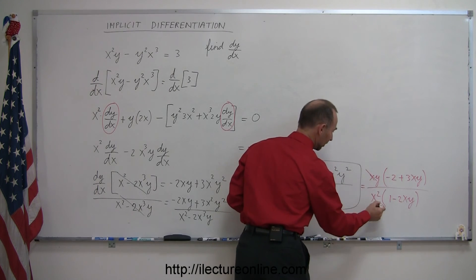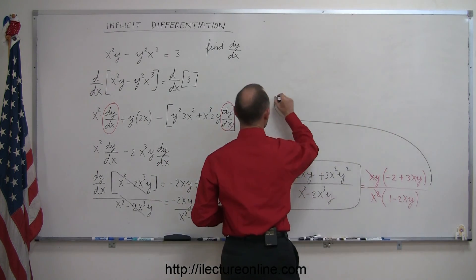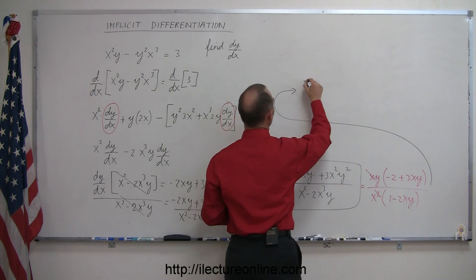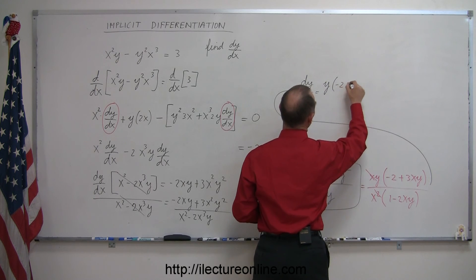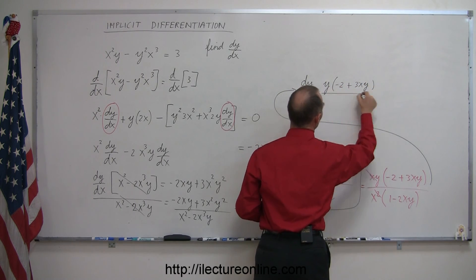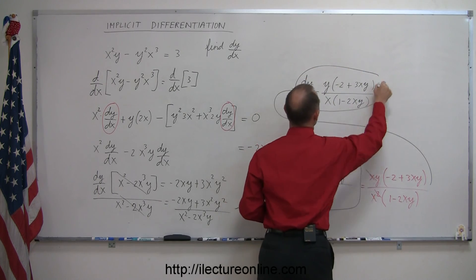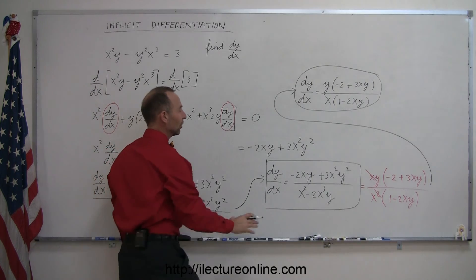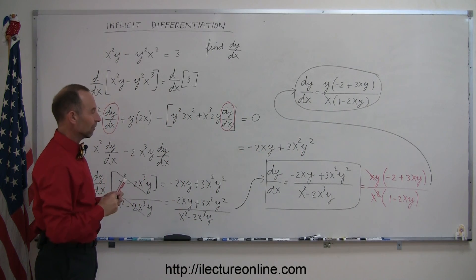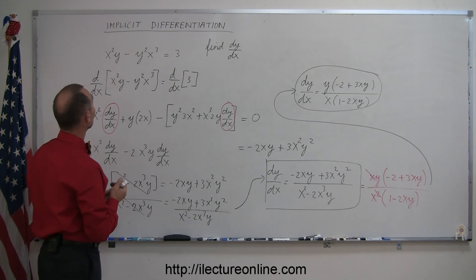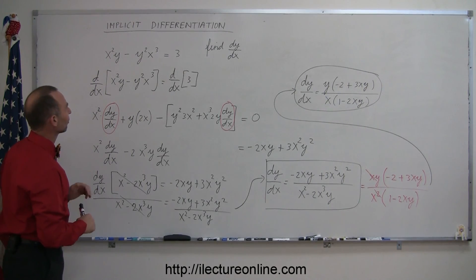You can see that this x cancels one of those in the denominator. So ultimately, in its simplest form, dy/dx can be written as y times the quantity minus 2 plus 3xy, divided by x times the quantity 1 minus 2xy. Most teachers would like you to simplify as much as possible — this is the correct answer, but if you can write it in a simpler algebraic form, you definitely should. So that's how you do implicit differentiation on problems that look like that. I think we need to do a couple more examples like this.